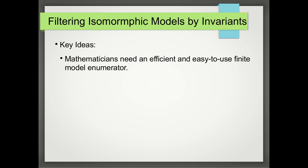Existing finite model enumerators usually generate huge lists of models, with very few of them being pairwise non-isomorphic. For any set of isomorphic models, we only want one of them because they all carry the same information. Our specific task is to efficiently extract the non-isomorphic models from a huge list that often contains hundreds of millions of models.